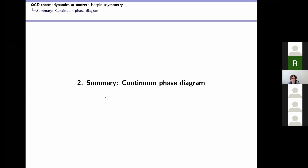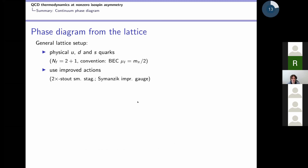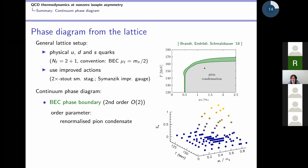Let me start with my summary concerning the continuum phase diagram. We use physical quark masses and pion masses, and improved actions. For the pion condensation phase boundary, the order parameter is the renormalized pion condensate. I'm showing a plot from an N_T equals 6 lattice, with the temperature axis and the isospin chemical potential axis. The phase boundary is basically the line where the pion condensate becomes non-zero, and what is shown on top is already the continuum extrapolation of this line.